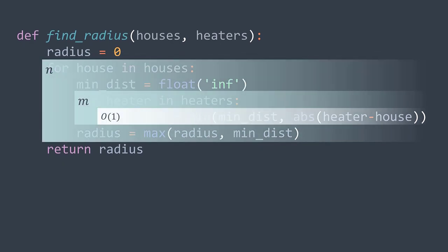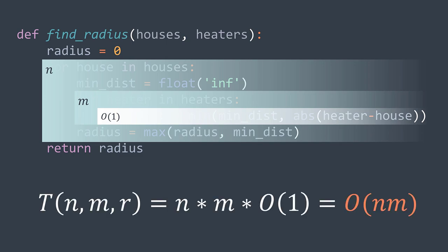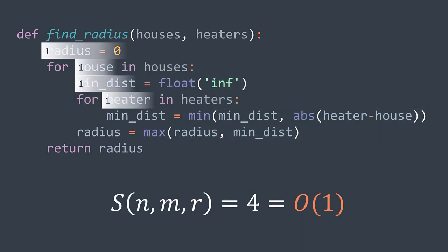For the time complexity, the outer loop does n iterations (number of houses) and the inner loop does m iterations (number of heaters), with O(1) operations inside — we get O(n * m) time complexity. For space complexity we get O(1) because we are not using size-related variables.